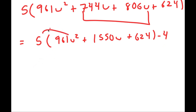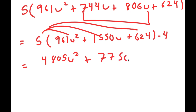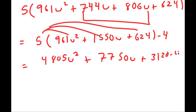And now I'm going to multiply all these terms by 5. So 5 times 961 is 4805 — and we have u squared. 5 times 1550 is 7750u. Finally 5 times 624 is 3120, and then we have minus 4 at the end, which turns into 3116.